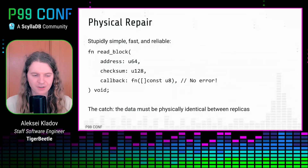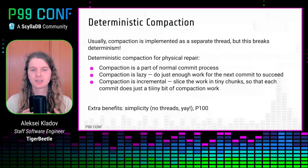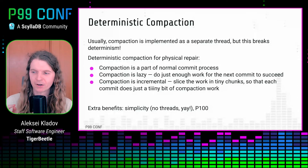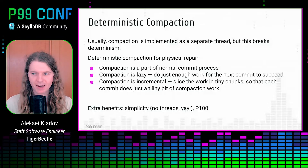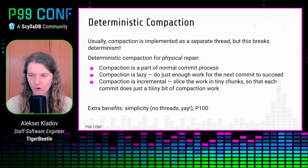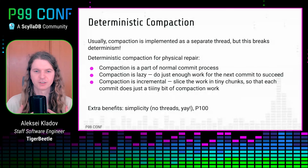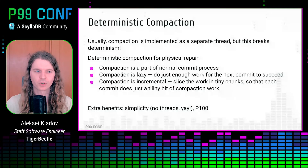There is just one catch. To make this function work, it is not enough that data is logically identical across replicas — the data must be physically identical. The same data should be represented in the same way everywhere. And that runs straight into the standard strategy for implementing compaction: a background thread or process that periodically reads data, finds redundancies, and eliminates them. The results of this compaction depend on the ordering between the compacting thread and the normal thread that mutates the database. So if you do compaction in a background thread, you don't get deterministic data files across replicas, and you would have to implement logical repair — something we don't want to do.